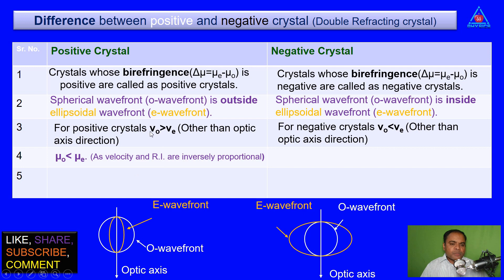As in positive crystal, Vo is greater than Ve, therefore for positive crystals μO is less than μE as velocity and refractive indices are inversely proportional.